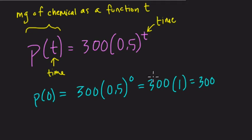So what does that tell me? Well, we said at 0 years, right? In other words, at the start of this timeline, there is 300 milligrams of this substance, right? Because P of 0, they told us P of 0 is the milligrams of the chemicals of function of time. So this tells us the milligrams of the chemical at 0 time.